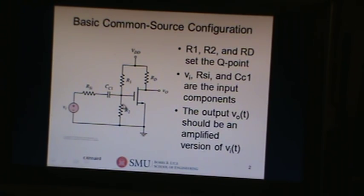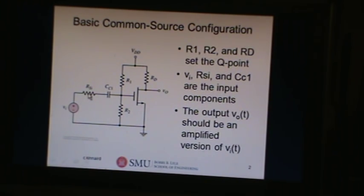It's called common source because the source terminal is tied directly to ground. R1 and R2, in conjunction with RD, set the voltage on the gate — we've seen that before in lab and in problems. The Q point, which we'll figure out first, comes from knowing R1, R2, and RD. The stuff on the left is all about the input signal, input resistance, and the input coupling capacitor. The output hopefully looks a lot like what we put in — that's the whole point of the thing.